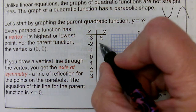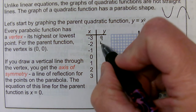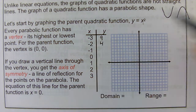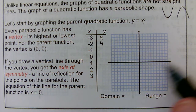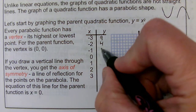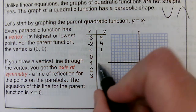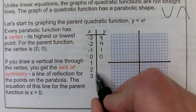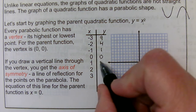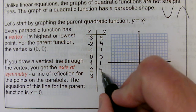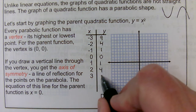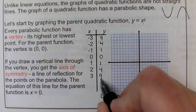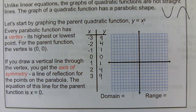Negative 2 squared is positive 4, because remember a negative times a negative is positive. Negative 1 squared is 1. 0 squared is 0. 1 squared is 1. 2 squared is 4. 3 squared is 9. And I'm going to plot these points.